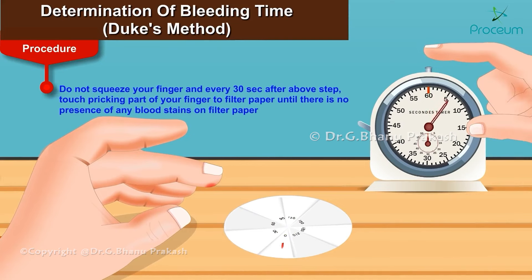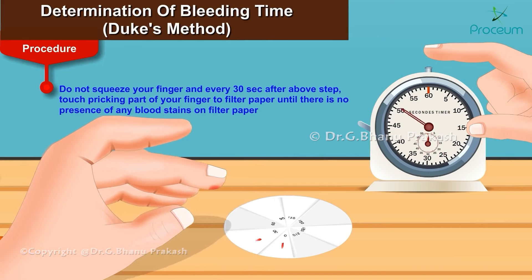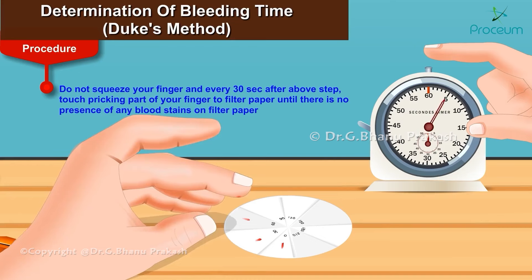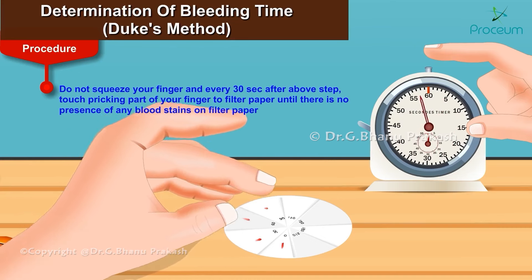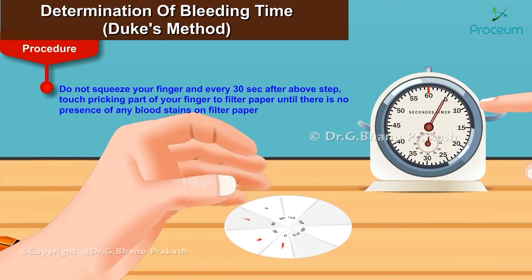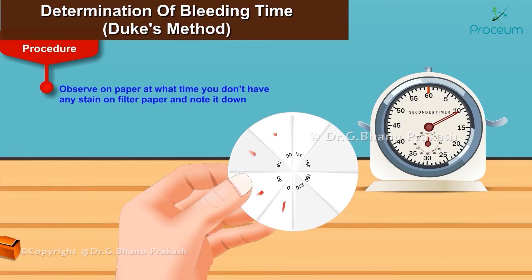Do not squeeze your finger, and for every 30 seconds touch the pricking part of your finger onto the filter paper until the filter paper is devoid of any bloodstains. Observe on the filter paper the time where it is devoid of any bloodstains and record it. This is the final time of the bleeding time.